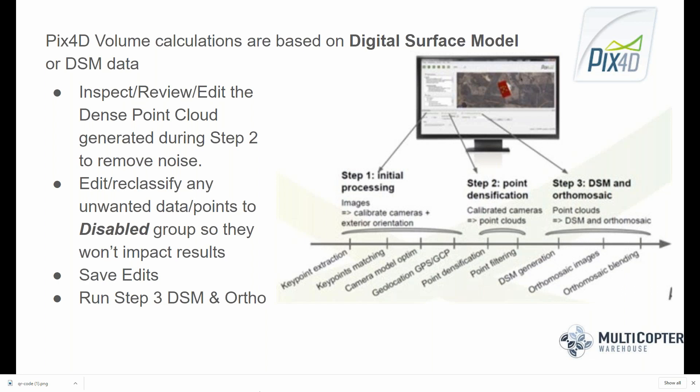Be mindful of what kind of area you're looking to measure, and reclassify any unwanted data points to what's called a disabled point group in PIX4D. Once disabled, those points will no longer impact the generation of the digital surface model. For example, if you're looking at the demo project PIX4D provides, there's an excavator sitting on a gravel pile — you need to classify all those excavator points as disabled prior to generating your digital surface model, otherwise the excavator itself will be included in volume calculations.